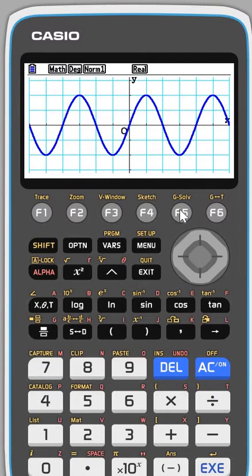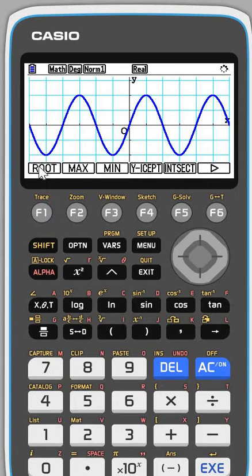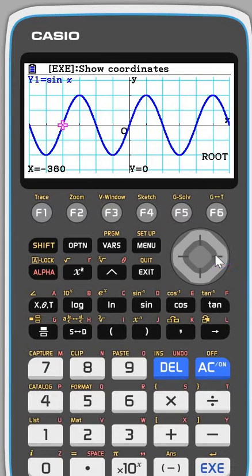I can use it to check where it crosses the x-axis, so I do g-solve and then root, and I can click my way along through those.